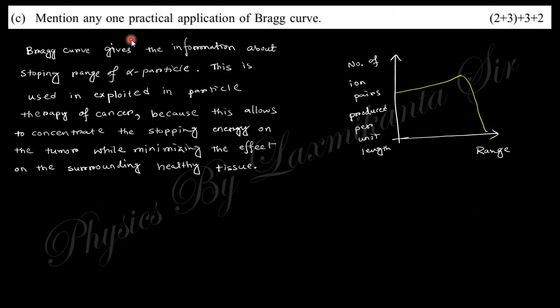The next part asks for one practical application of the Bragg curve. The Bragg curve gives the stopping range of an alpha particle as it penetrates a material, showing a maximum energy deposition at a specific depth (the Bragg peak). This is applied in cancer therapy: since the alpha particle deposits maximum energy at a defined range, it can be used to destroy cancerous (damaged) tissue without harming surrounding healthy tissue, provided the spread of the cancer is known.